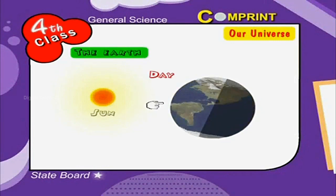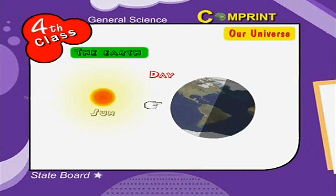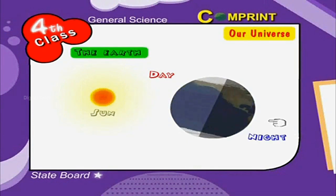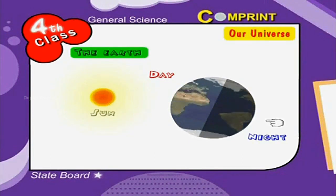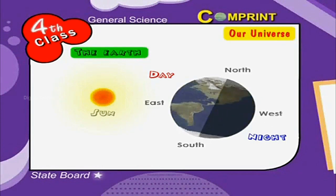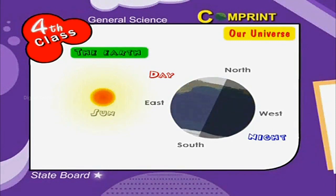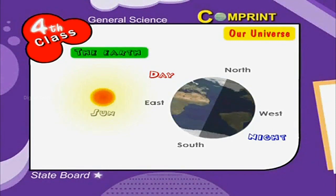As the earth moves slowly, we don't notice its rotation. Day is formed on that part of the earth which faces the Sun. Night is formed on that part of the earth on which sunlight doesn't fall. People on the earth feel that the Sun is turning from east to west because the earth is turning from west to east.